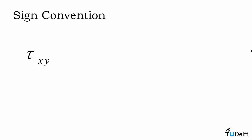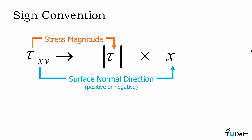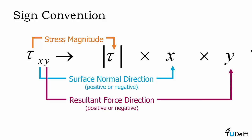To apply the sign to this stress we will first take the magnitude of that stress. We will then multiply it by the direction of the surface normal relative to our coordinate system. So if the surface normal is in the positive x direction we would multiply it by positive 1. We then multiply that by the sign for the resultant force direction. So if it's in the positive y direction this would be a positive 1 value.